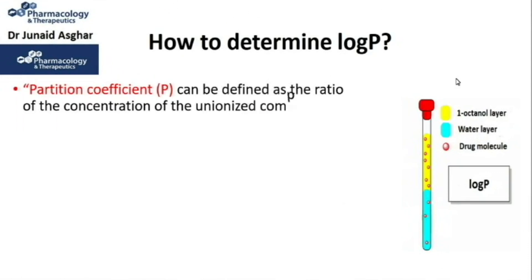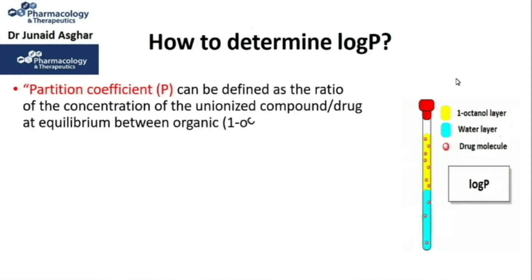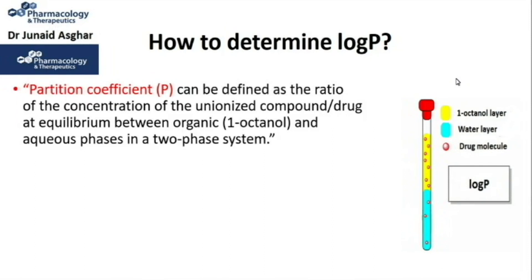The partition coefficient can be defined as the ratio of the concentration of the unionized compound or drug at equilibrium between the organic or 1-octanol phase and the aqueous phase in a two-phase system — that is, the concentration of the unionized drug in the 1-octanol phase over its concentration in the aqueous phase.